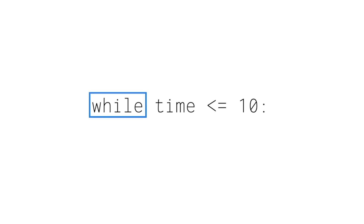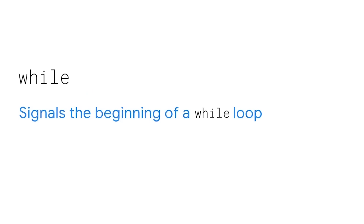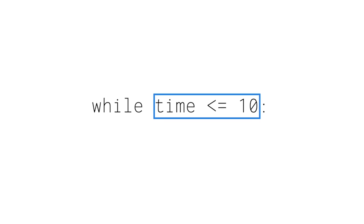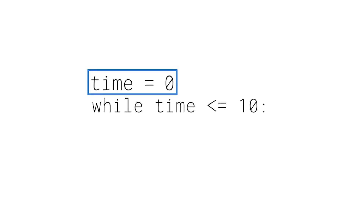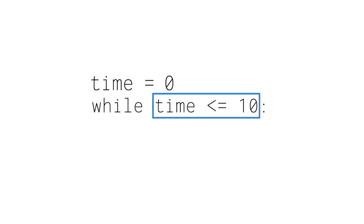Similar to the for loop, a while loop has a header consisting of the keyword while, the condition, and a colon. The keyword while signals the beginning of a while loop, followed by the condition that evaluates to a Boolean value of true or false. The condition contains the loop variable, which controls the number of iterations. However, there's an important distinction: with while loops, the variable isn't created within the loop statement itself — you need to assign it before writing the loop, then reference it in the loop. When the condition evaluates to true, the loop iterates; if not, it stops. The loop header ends with a colon.